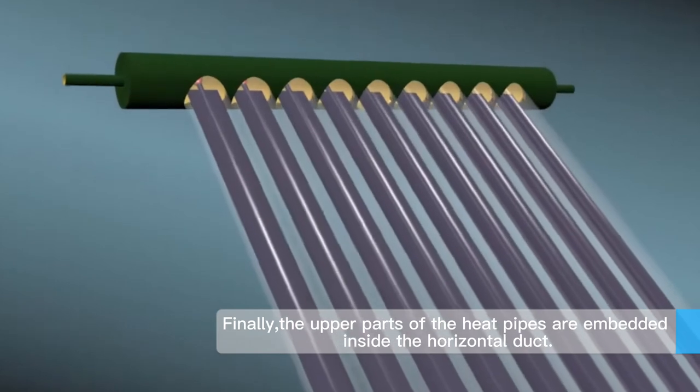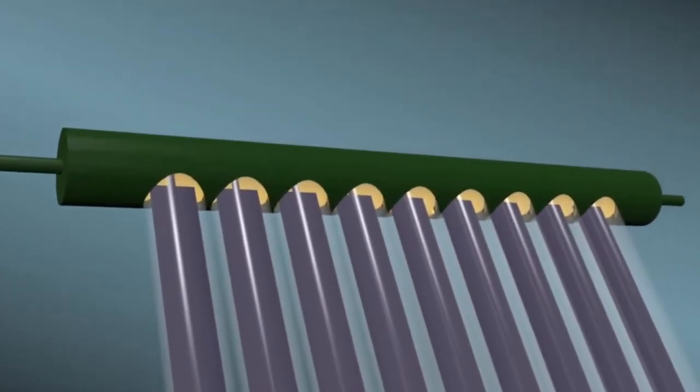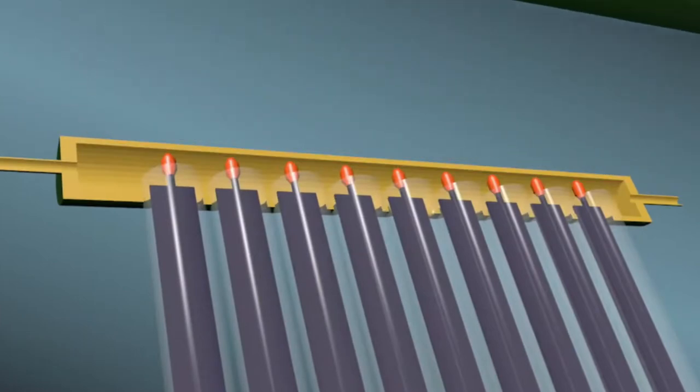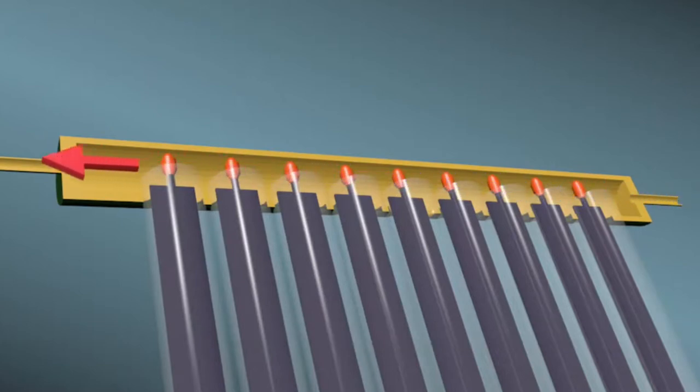Finally, the upper parts of the heat pipes are embedded inside the horizontal duct. The water to be heated is circulated through this duct.